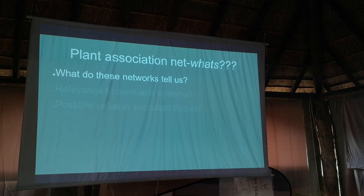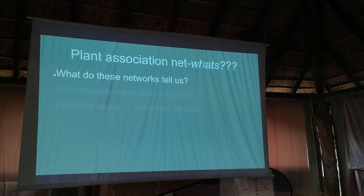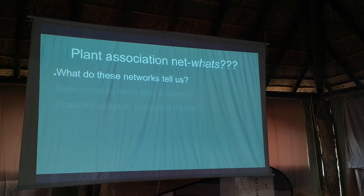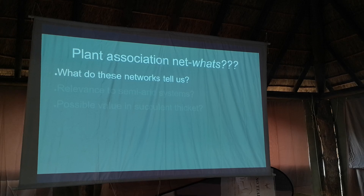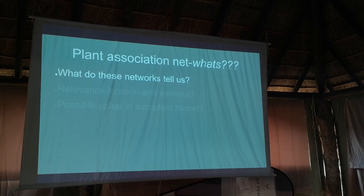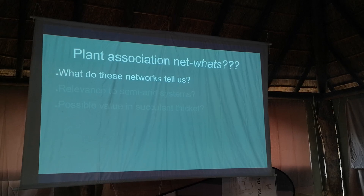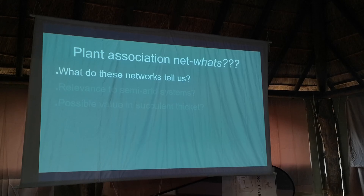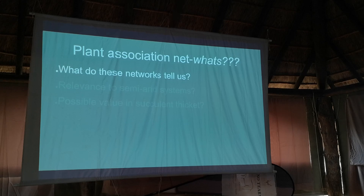A plant association network is a way of looking at how frequently plants co-occur - what are the trends in plants that co-occur. You create a network and then ask: who is fundamental to that network, who's holding it together, and who are just those friends that pop around once in a while but aren't too important? This can tell us who is helping who, who's just there, and who's competing with who.